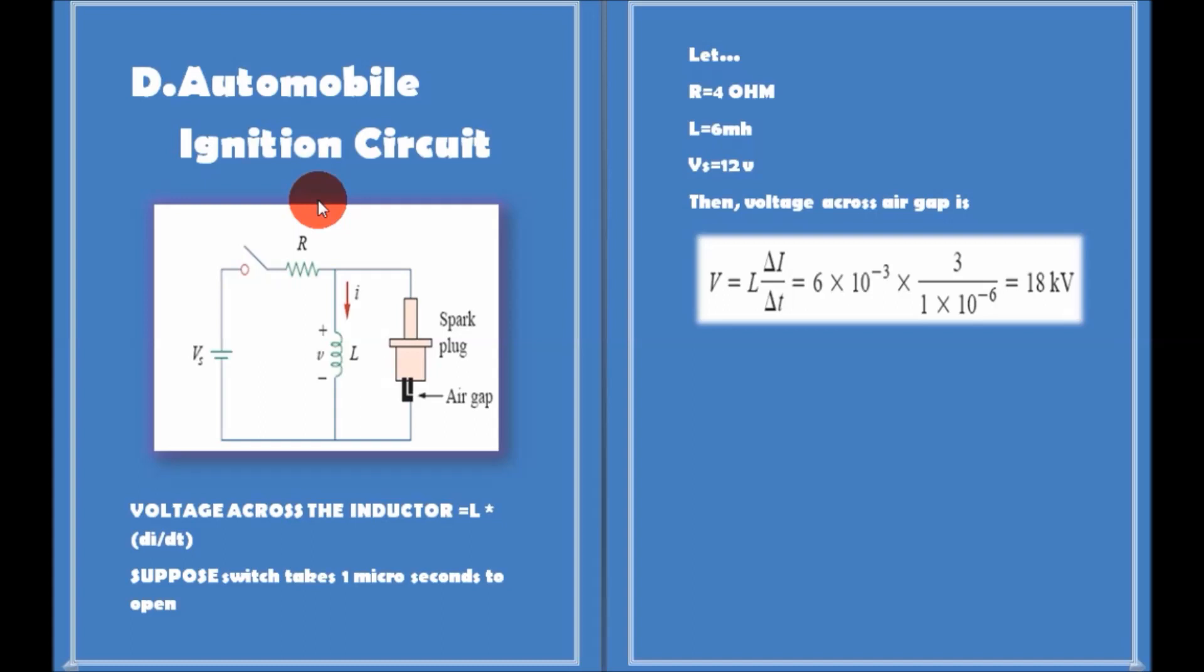In the fourth DC application of an RLC network, we are going to see how an automobile ignition circuit works. The principle of automobile ignition circuit is based on the fact that inductors always oppose a rapid change in current, which makes them useful for generating arcs and sparks.